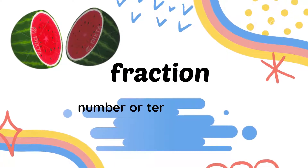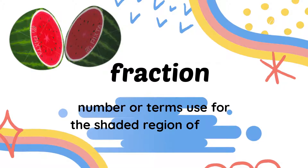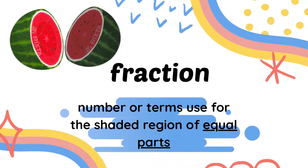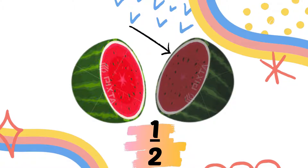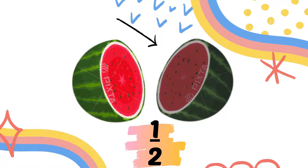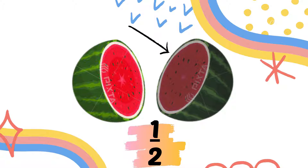Now, how about the word 'fraction'? The word 'fraction' indicates the number or terms used for the shaded region of the equal parts. I'm going to show you how we're going to write the number for this question. As the question says, one portion is given away to the neighbor, this indicates the shaded region will be 1 over 2. You write the number 1 on the top, draw the line, and write number 2 at the bottom, as we have two equal parts of the watermelon.